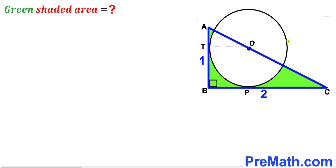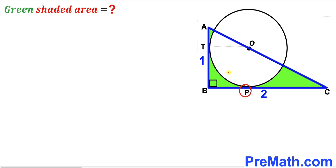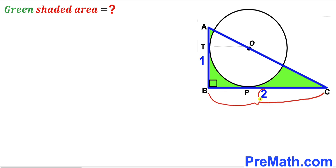Welcome to pre-math. In this video we have a circle with center O together with a right triangle ABC, such that points A, O, and C are collinear. The points P and T are points of tangency. Side AB of this triangle is one unit whereas side BC is two units.